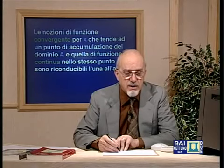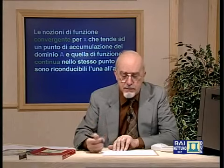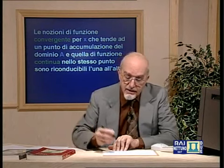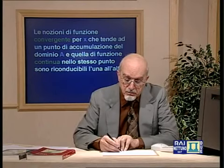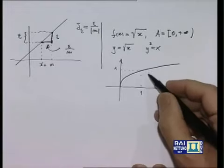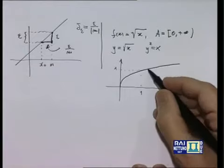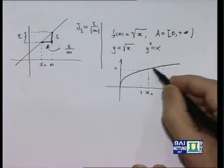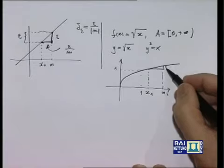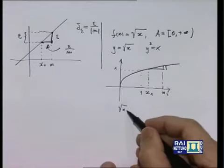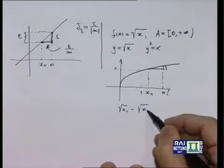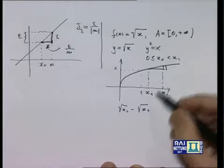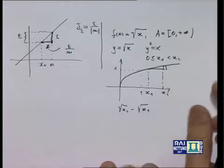Per dimostrare la continuità di questa funzione, dimostriamo prima una disuguaglianza ausiliaria molto utile. Prendiamo due punti x₁, x₂ nel dominio con 0 ≤ x₁ < x₂. La variazione che la funzione subisce è √x₂ - √x₁, che per sua natura è positiva. Ci chiediamo: se trasliamo questi due punti verso sinistra mantenendo costante la loro distanza x₂ - x₁, questa variazione cosa fa? Aumenta o diminuisce?